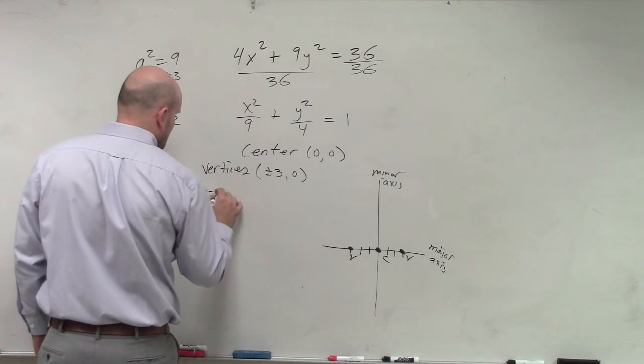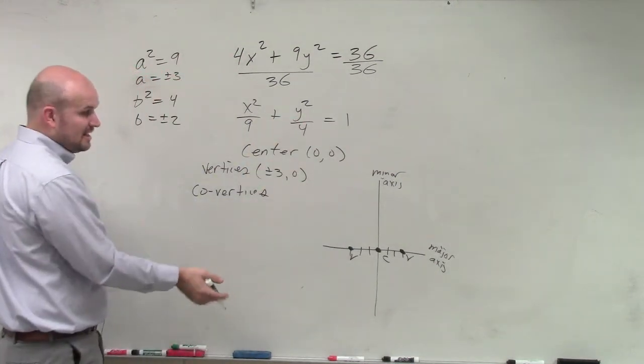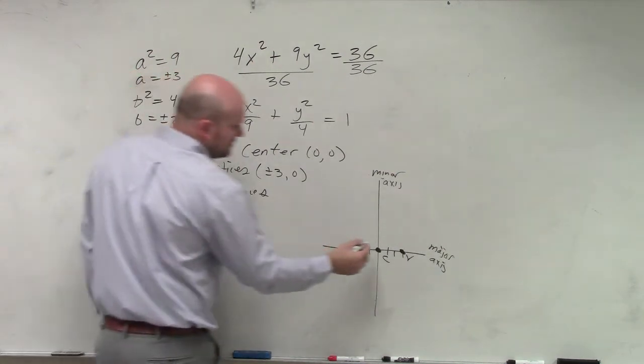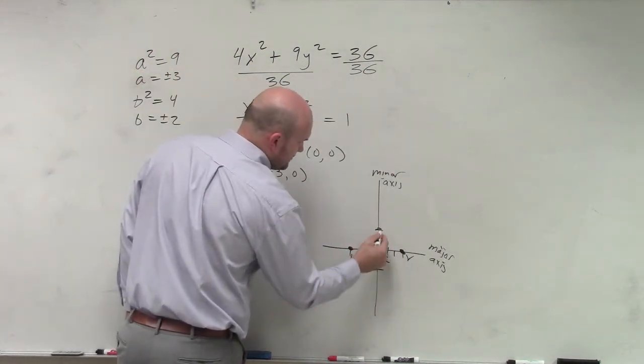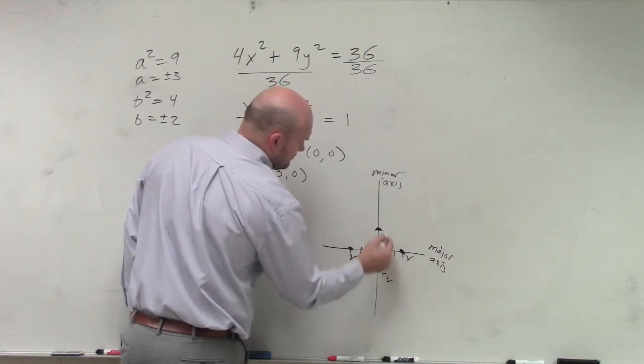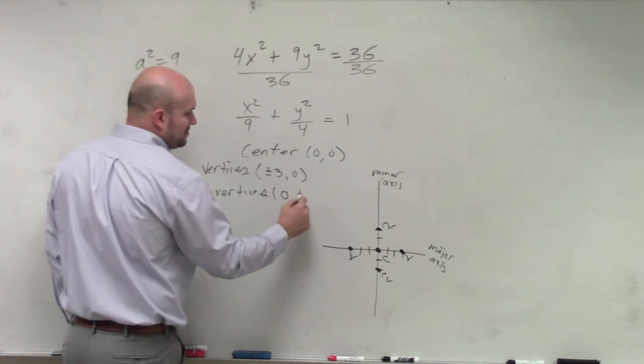The co-vertices are on the minor axis. And those have a distance of b. So b is 2. So we're going to go up 2 and down 2. So that is going to be at 0 comma plus or minus 2.